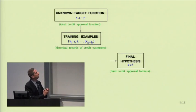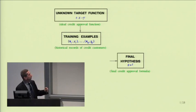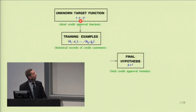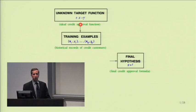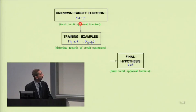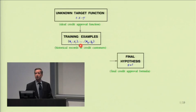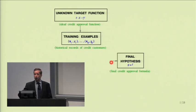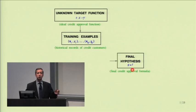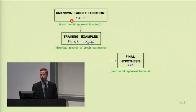Let's put it in a diagram. Here is the target function — it is unknown, the ideal approval we will never know, but what we hope to approximate. We see it only through the eyes of the training examples, which are our vehicle for understanding what the target function is. Eventually, we'd like to produce the final hypothesis — the formula the bank will use to approve or deny credit, with the hope that G hopefully approximates F.